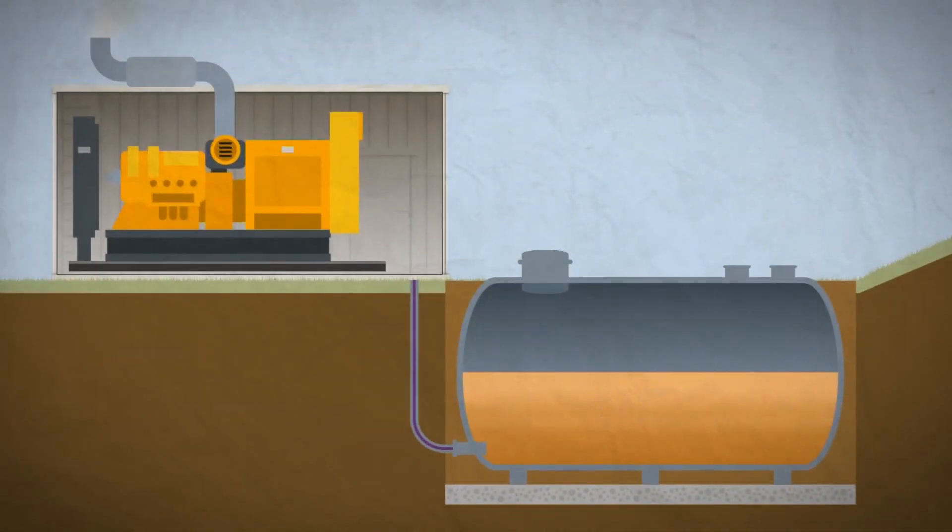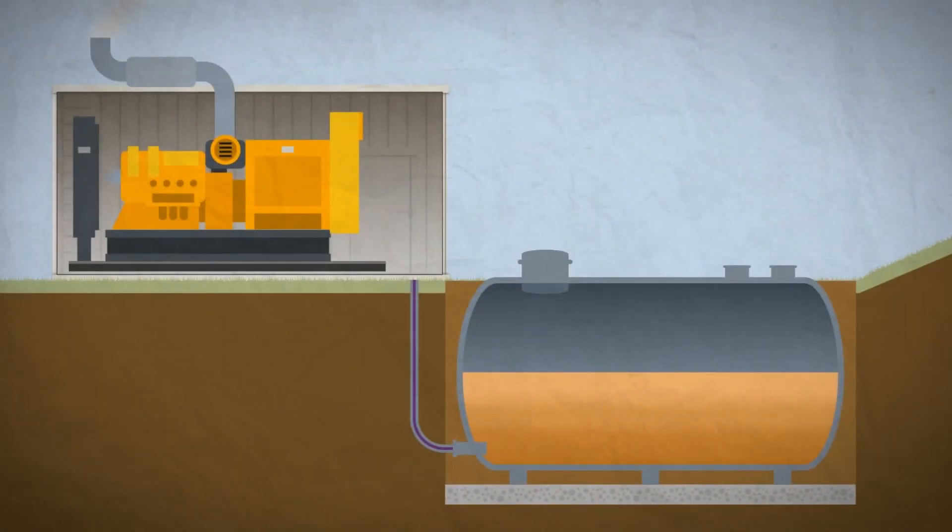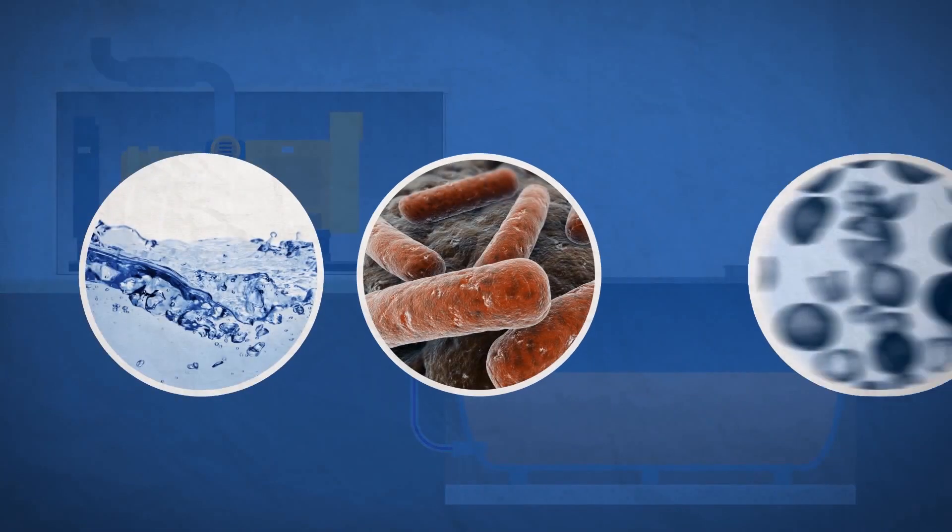It's now widely accepted that if stored under normal conditions, diesel will remain in a usable condition for just 6 to 12 months. As it gets older, diesel suffers from three main types of contamination: water, bacterial growth or diesel bug, and solid particulates.